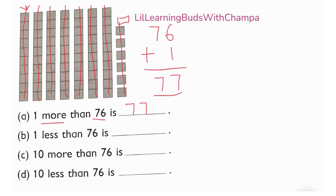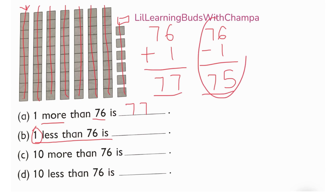So 77. One less than 76 — 'less than' means subtract or take away. How much do you have to take away? One. Take away one is 75. If you don't know how to do it like this, you can take away from here and then say 75.